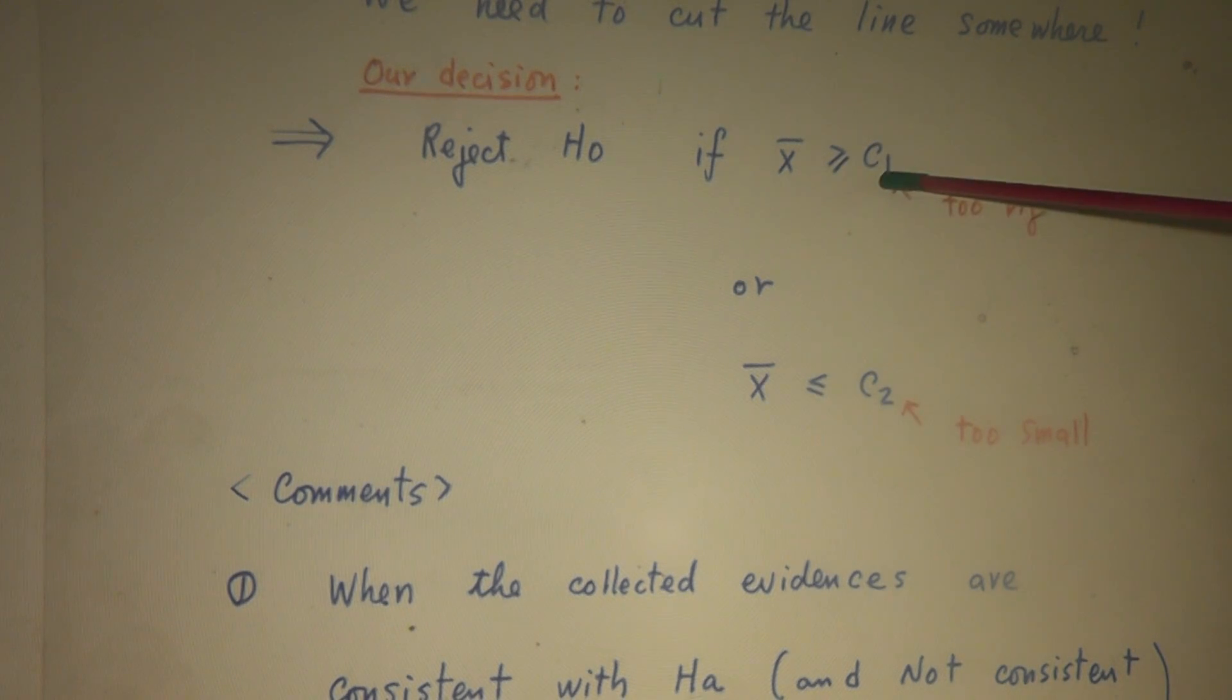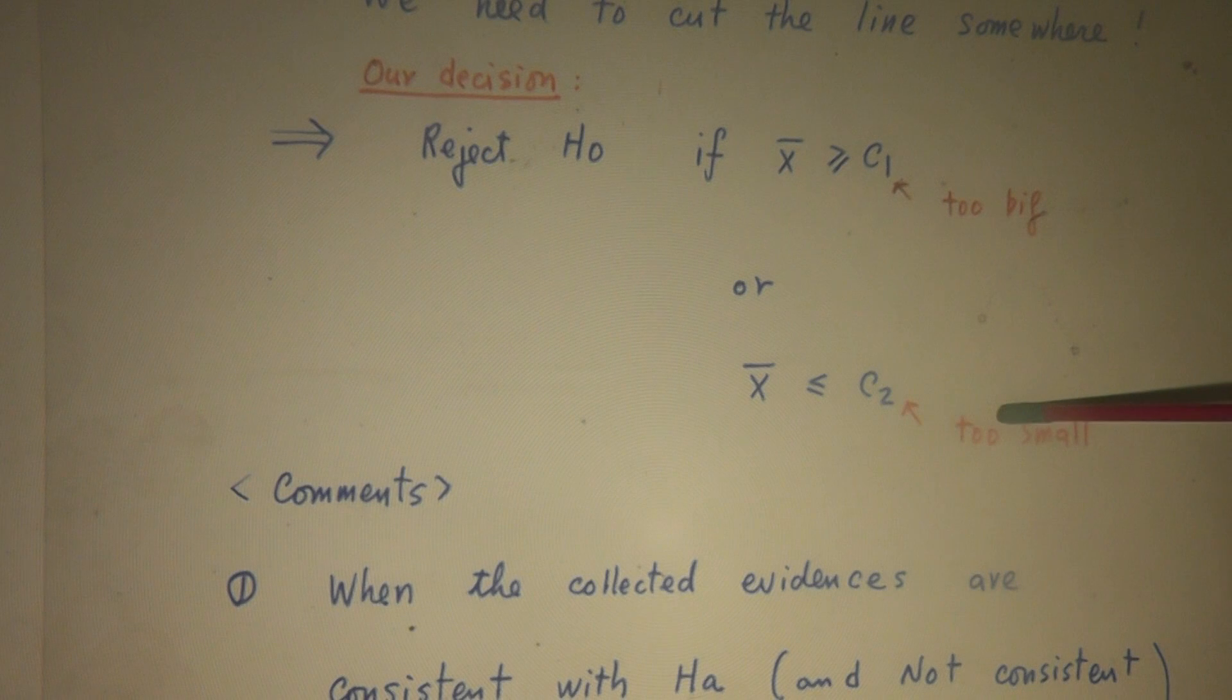We reject H-naught if x-bar greater or equal to C1 or x-bar less or equal to C2. C1 is a number used to denote what is too big, C2 is a number used to denote what is too small. When the observed evidence, the sample percentage, is greater or equal to C1 it's too big. When the observed evidence, the sample percentage, is less or equal to C2, you think this is too small.